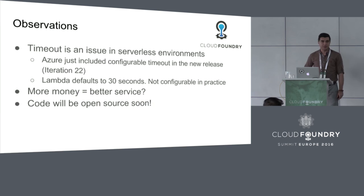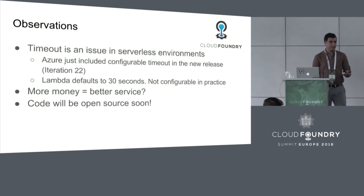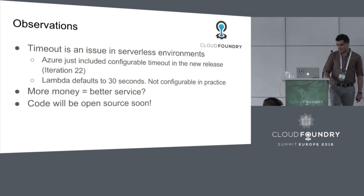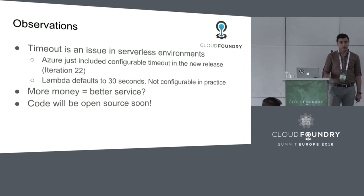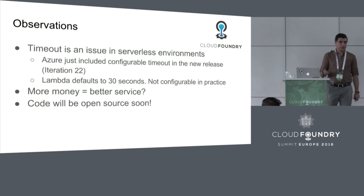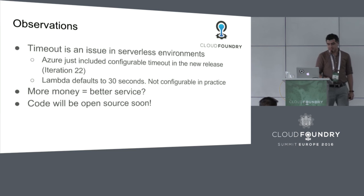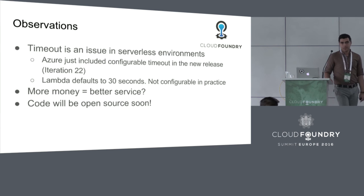General observations from the experiments: timeout was an issue. A lot of these environments, even though they claim to have configurable timeouts, really don't. In Amazon, the default is 30 seconds, and if you change it to 5 minutes, it's still 30 seconds. For Azure, it's not yet configurable — they claim the default is 5 minutes, but we usually observed timeouts much faster than that. So it's still kind of sketchy.